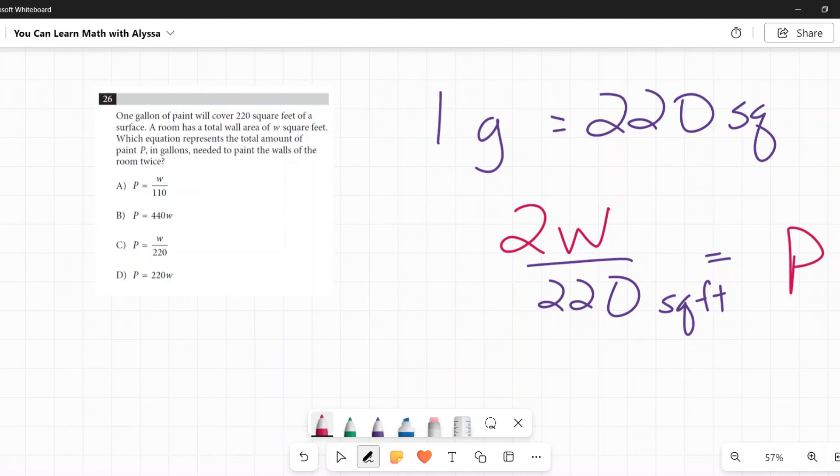Now do we see 2W over 220 anywhere over here? No, we don't. And that's because 220 is divisible by 2, so this fraction can be simplified.